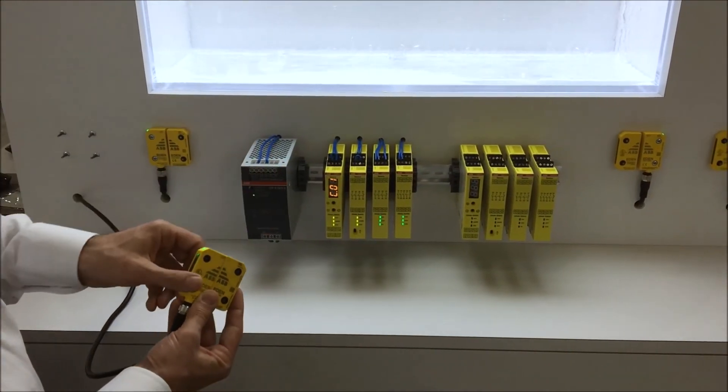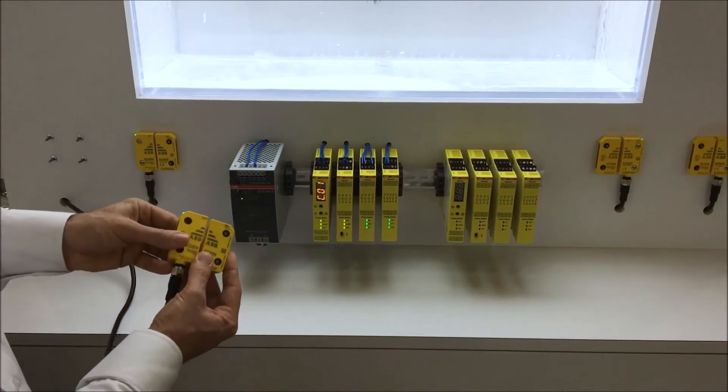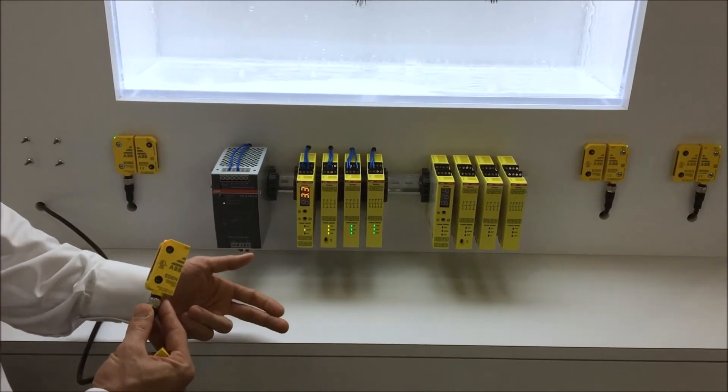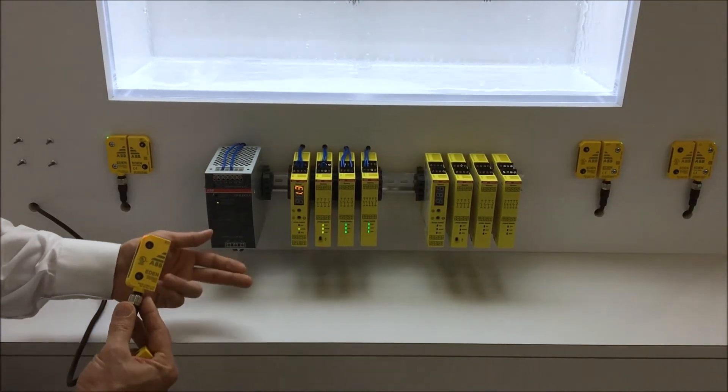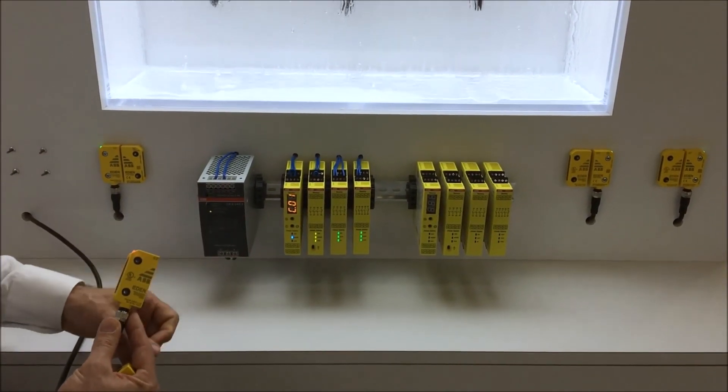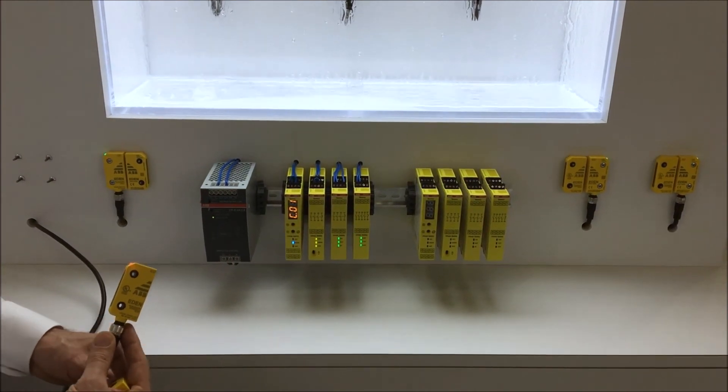This particular relay is set for an off delay. When I open my door, I will be sending a stop signal to the drives, possibly to the enable, to allow it to stop. Within a time delay, I then will drop my secondary output which will go directly to the contact is killing power to those motors.